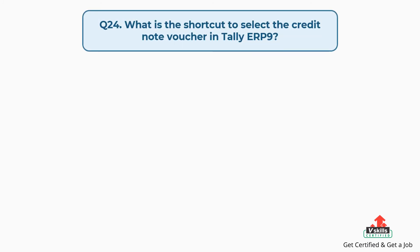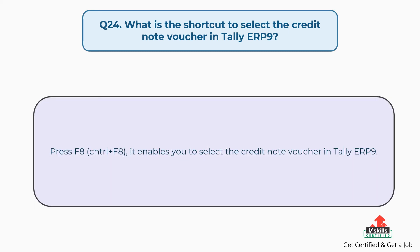Question number twenty four: what is the shortcut to select the credit note voucher in Tally ERP9? Press CTRL plus F8, which enables you to select the credit note voucher in Tally ERP9.